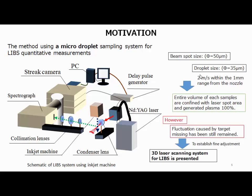However, fluctuation caused by the target position has still remained. So to address this, we propose a 3-dimensional laser scanning system for the LIBS system. Today's presentation topic is this 3D scanning system.